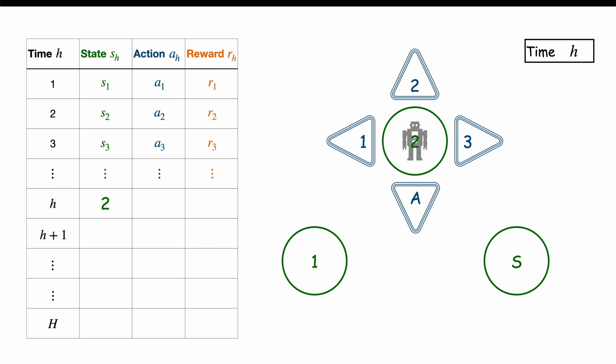At each time H from 1 to a horizon capital H, the agent is in a certain state SH, here equal to 2 on the screen. Then they choose one action AH, here it is action 3, and finally they receive a random reward RH equal to 0.5 in our example. Then the agent will be teleported to the next state SH plus 1 following the probability distribution P given H SH AH, which depends on the current time, state, and action.